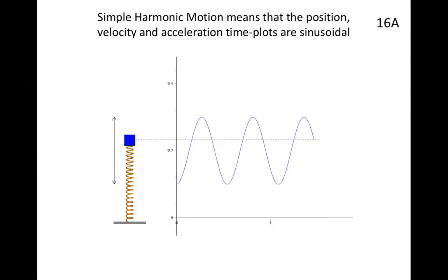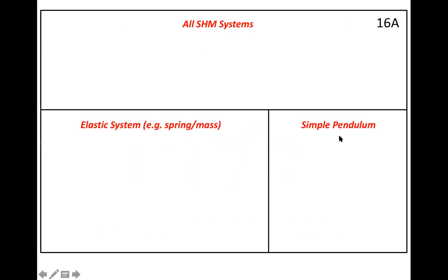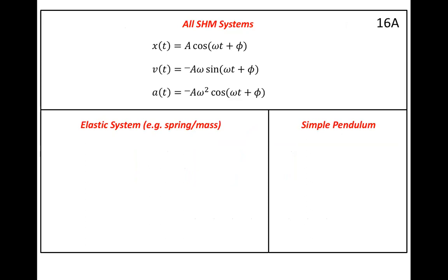That's what we mean by simple harmonic motion: 'harmonic' means sinusoidal, 'simple' means it just goes up and down. The equations that go with this are in a box: position has a cosine, with amplitude A out front — that's what A stands for, and this is true for any simple harmonic motion system. Omega is our angular frequency; we call omega-t plus phi the phase. The velocity has a negative sine with an extra omega out front, and the same phase. Acceleration brings you back to cosine with a minus and omega squared.